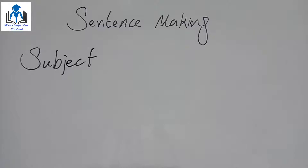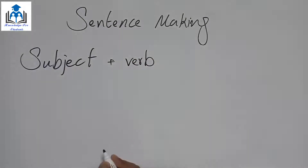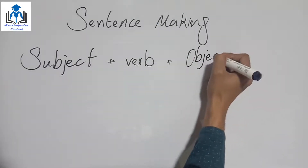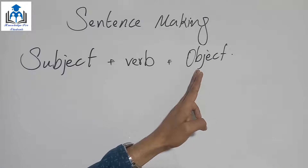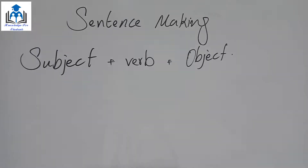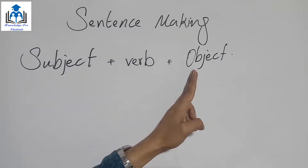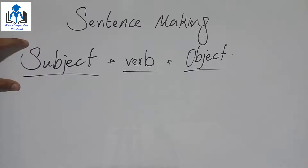To make a sentence, first we need a subject. The second thing we need is a verb, and the third thing we need is an object. We need to understand what subject, verb, and object are. Basically, this is the order/arrangement of our sentence — first we write the subject, then the verb, then the object.